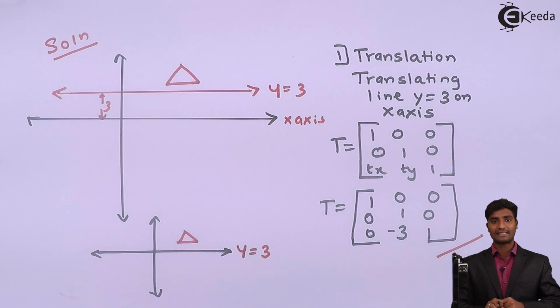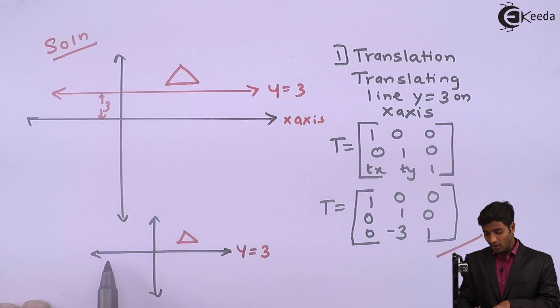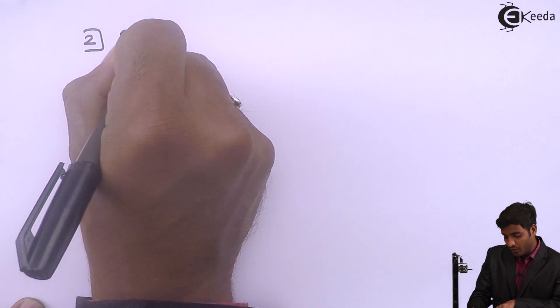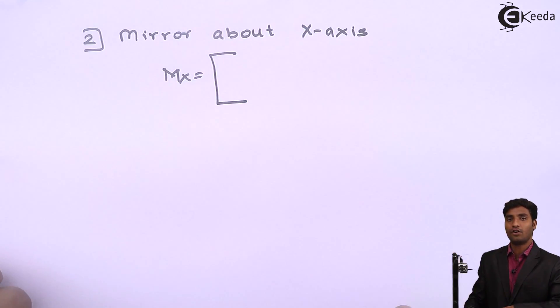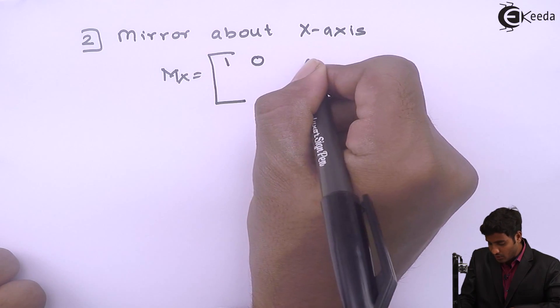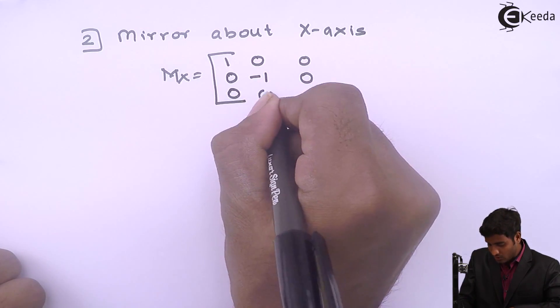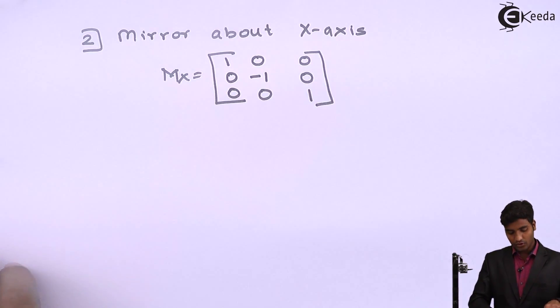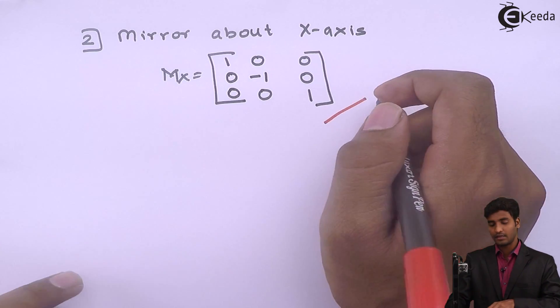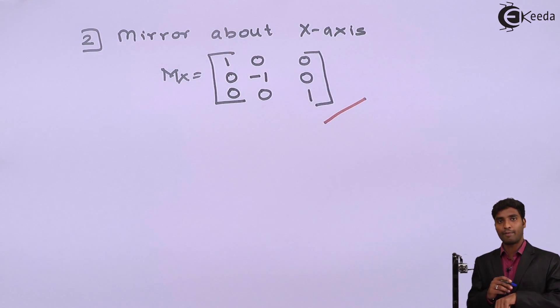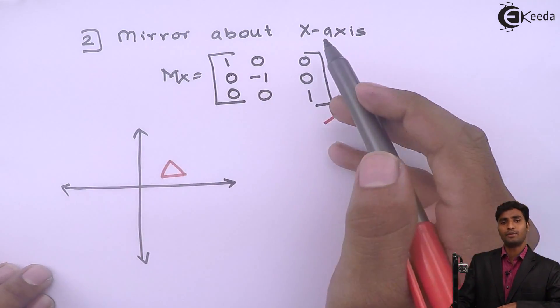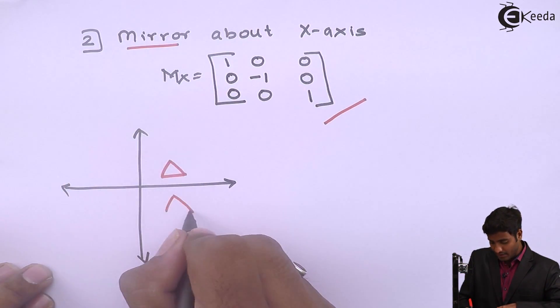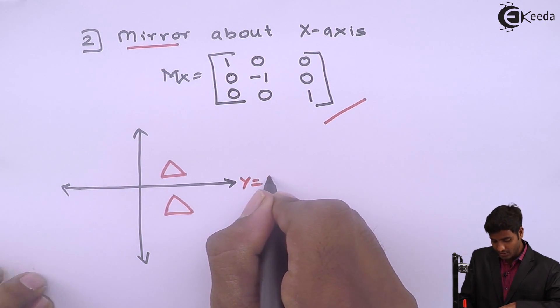Now I will perform the mirror transformation about the x-axis — reflecting this triangle about the x-axis. The standard matrix for mirror about the x-axis is [1,0,0 / 0,−1,0 / 0,0,1]. After performing this mirror transformation, the triangle gets reflected about the x-axis, which corresponds to reflecting about the original line y equals 3.